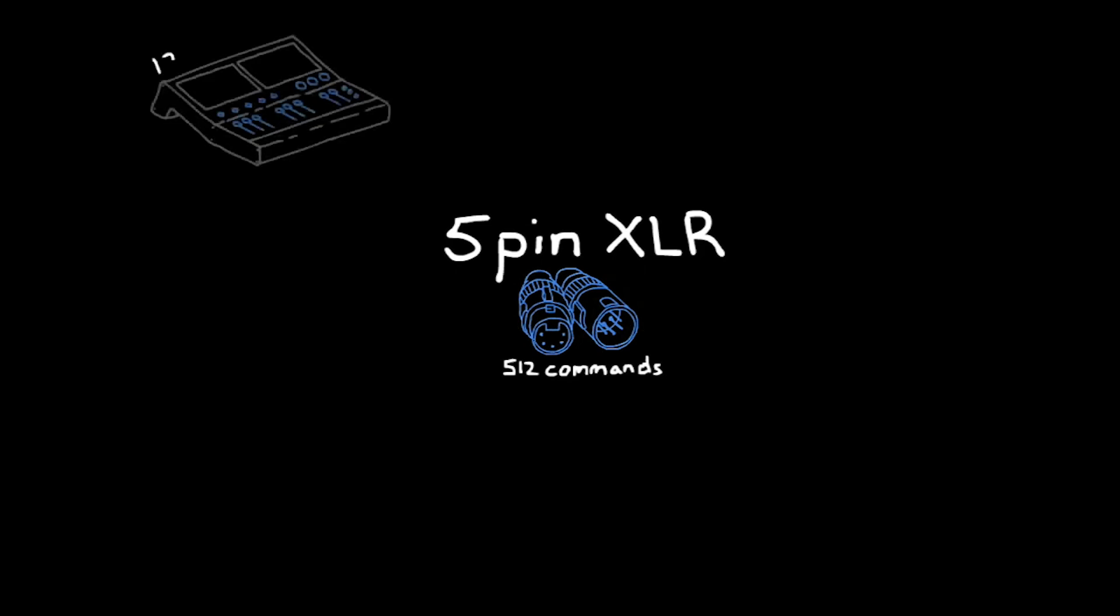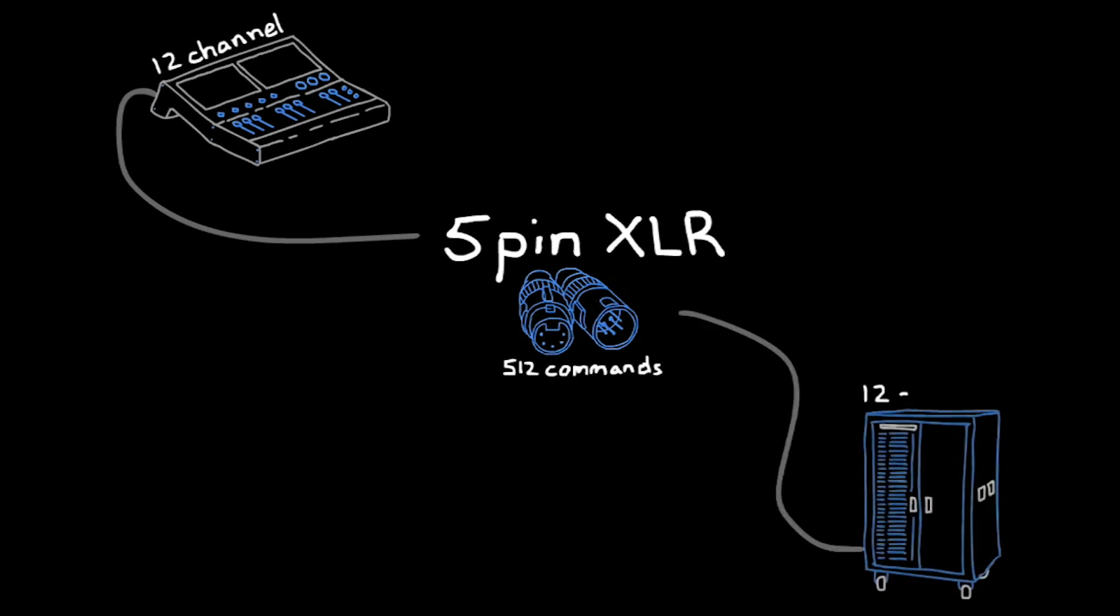DMX is sent through a 5-pin XLR cable. The DMX 512 cable can carry 512 commands or parameters. It can recognize if you have a 12-channel console. You are going to use up to 12 parameters or commands, talking to 12 dimmers.